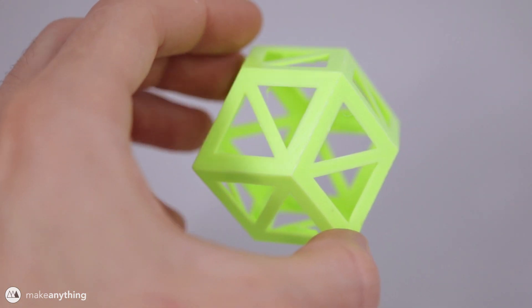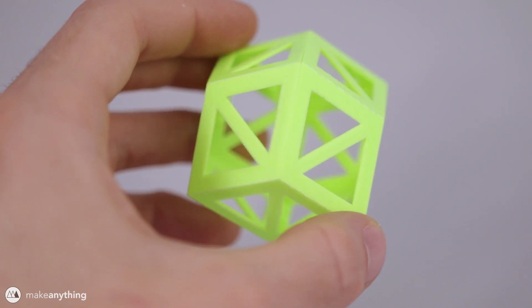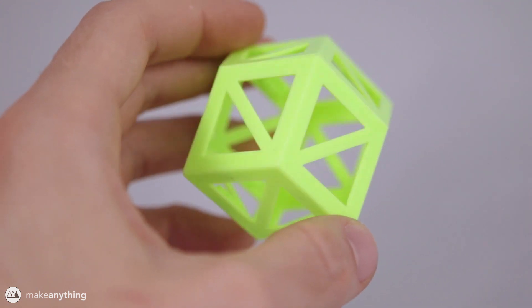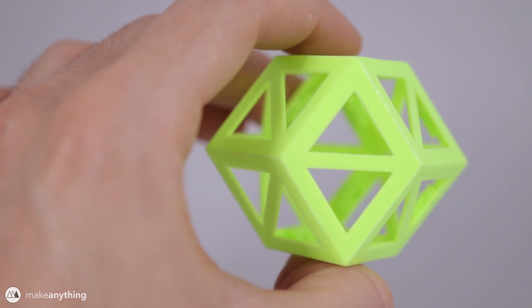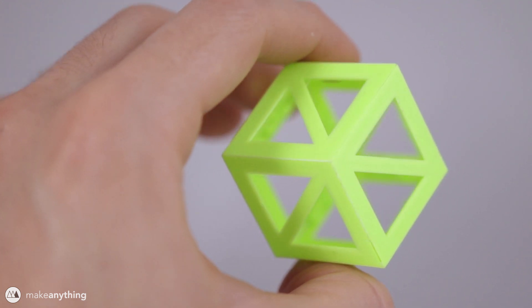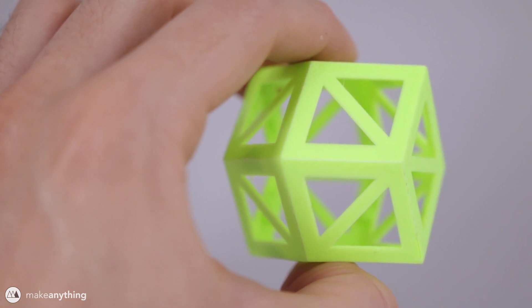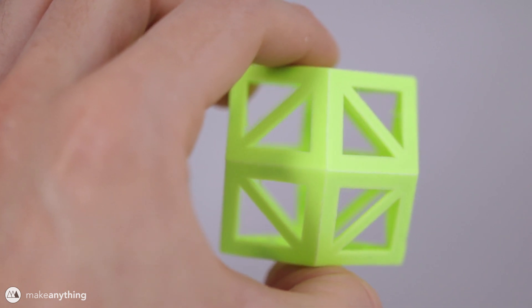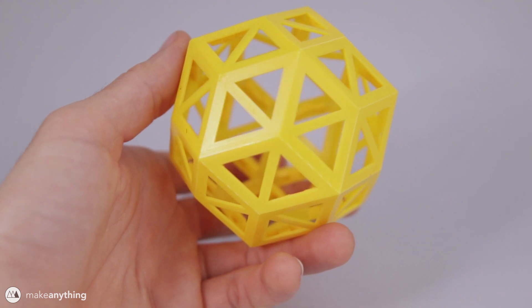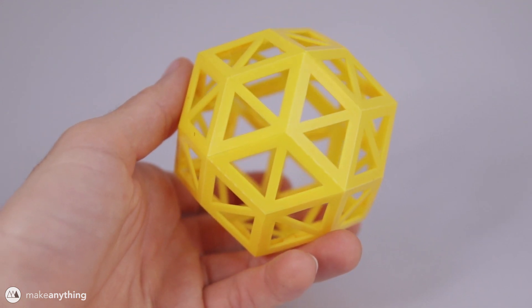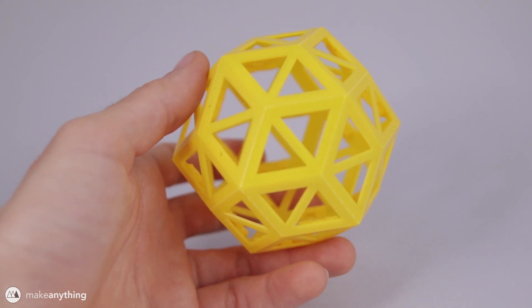These things are really satisfying so I just kept designing different polyhedra. Here's a rhombic dodecahedron and this one has some really cool hidden shapes depending on how you look at it. Check out this crazy one, it's called a rhombic triacontahedron and it's made up of 30 identical rhombic faces.